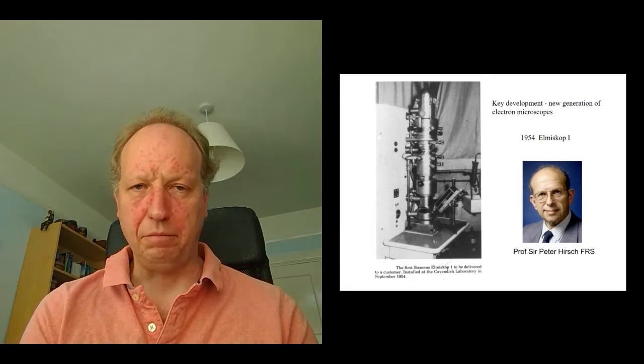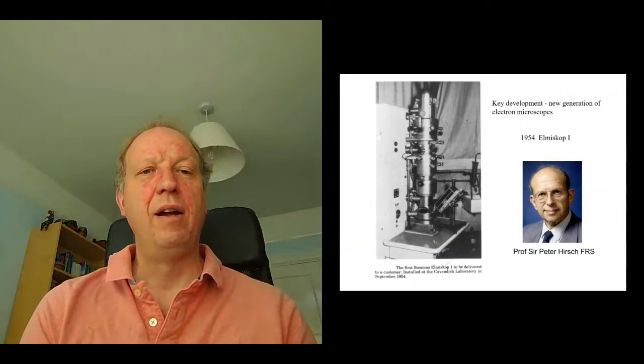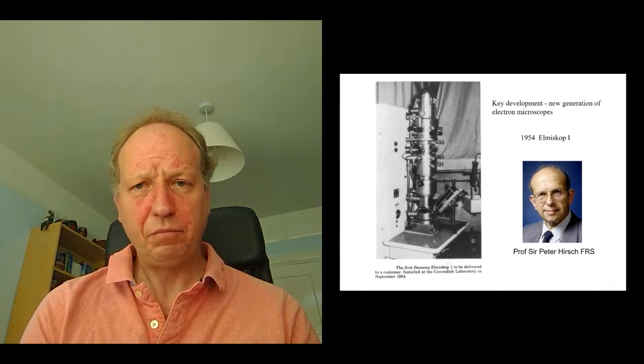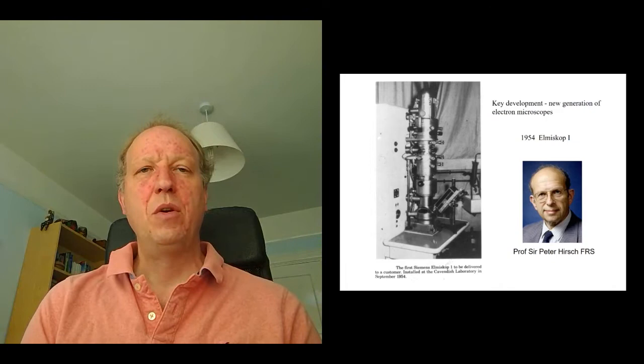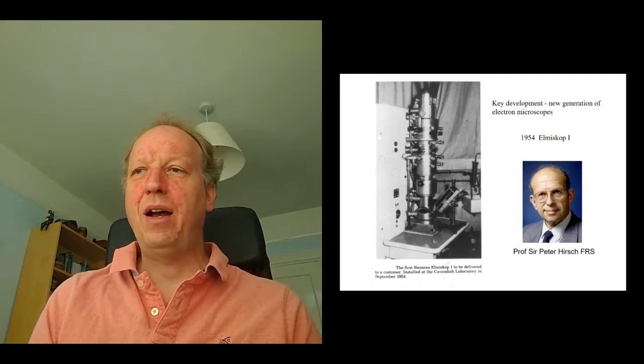This microscope had actually primarily been used for looking at biological samples, looking at cells and so on. But he was interested in looking at the scattering involved with very, very thin sheets of metal. So why did he want to look at metal? Well, what he wanted to do was to explain one of what I think is one of the most interesting experiments that you can do in material science. And it's incredibly straightforward, and you can all do it.